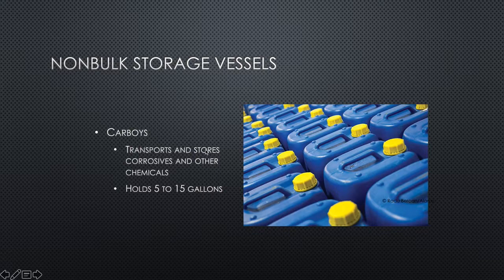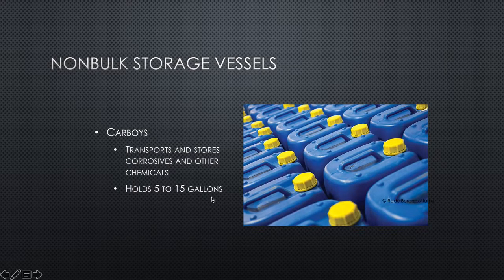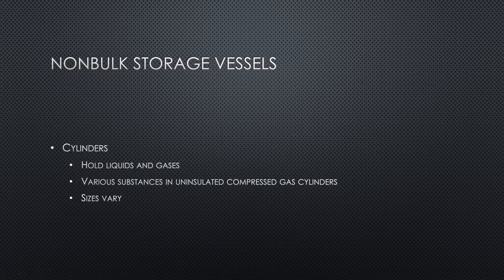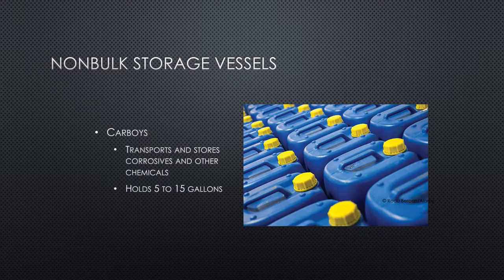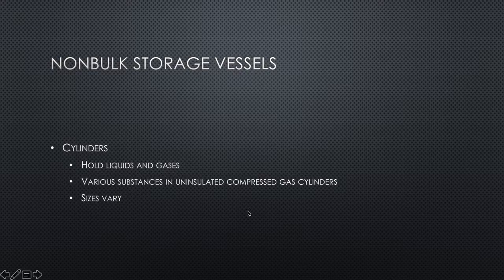More non-bulk storage vessels include carboys, which transport and store corrosives and other chemicals, holding 5 to 15 gallons — much like a drum but smaller. You also have cylinders, which hold liquids and gases and various substances, including insulated compressed gas cylinders. The sizes vary.